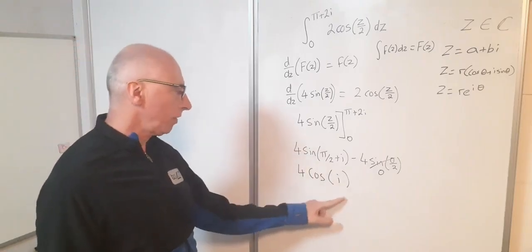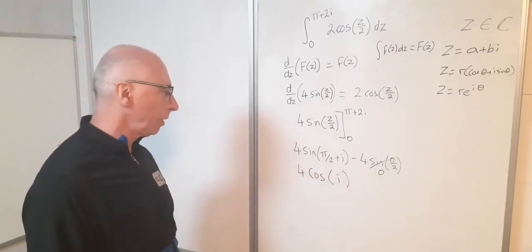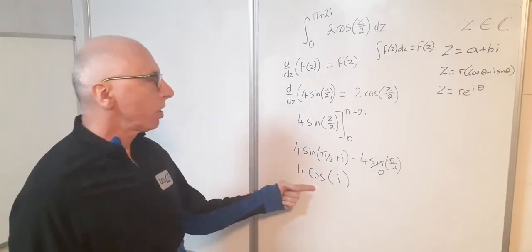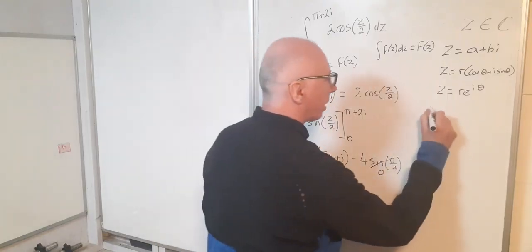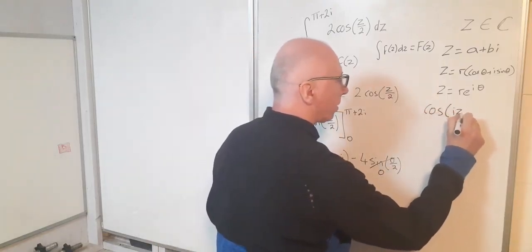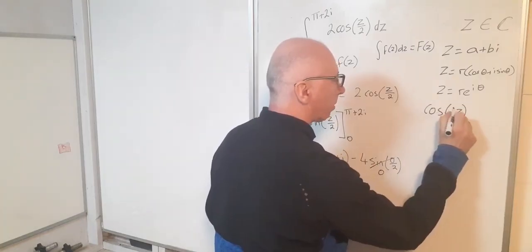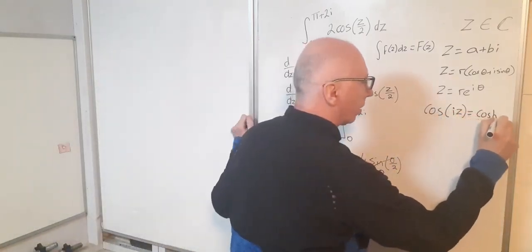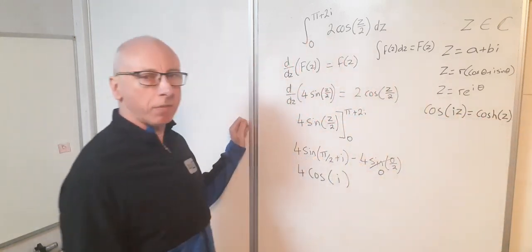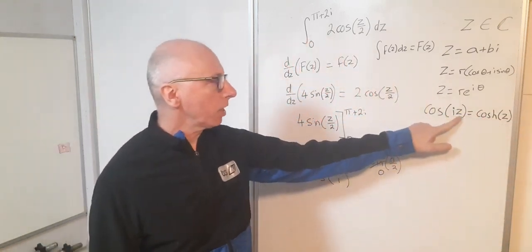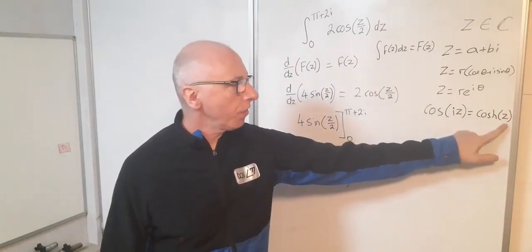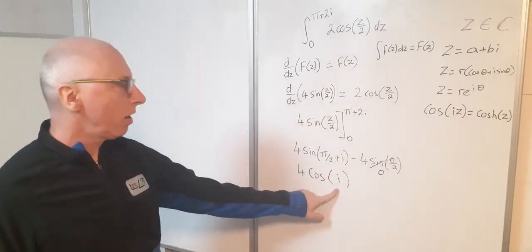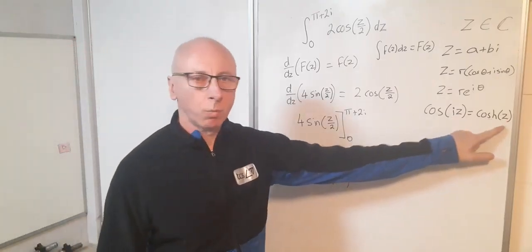Now here cosine of i, that would be reasonable to put that as our result of our integral, but we can do better. So we know there's an identity for cosine: cosine of iz where z is some complex number. Now the result of that is cosh of z. So whatever my input is here in my cosine, my result is cosh of that input without the imaginary constant. So 4 cosine i would be the same as 4 cosh of 1.